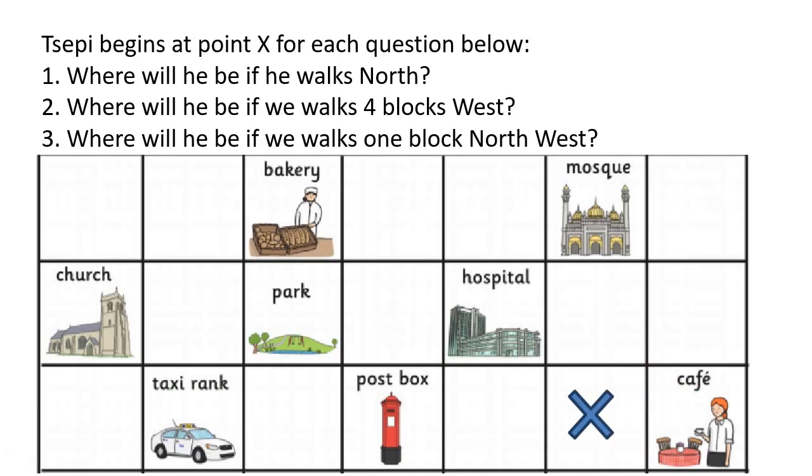Tsepi begins at point X for each question below. So here's where Tsepi is standing. So let's just say here. Tsepi. All right. Where will he be if he walks north? Now remember, north, south, or now we shall eat, and then northeast, northwest, southwest, southeast.